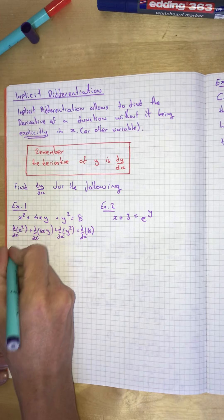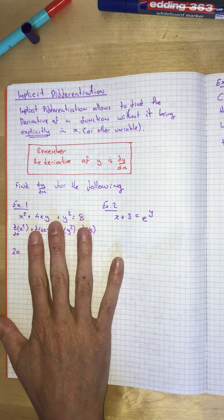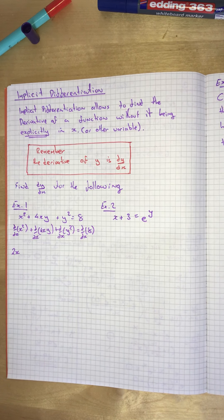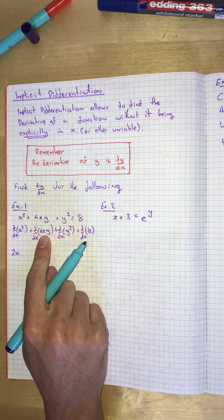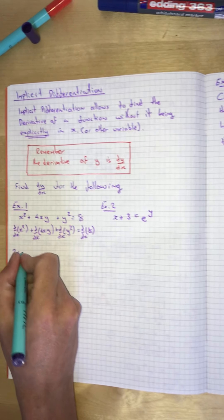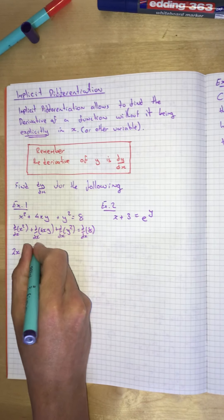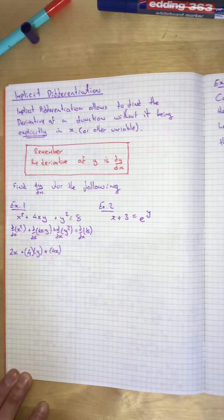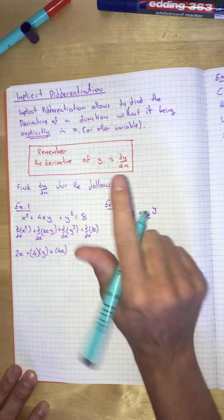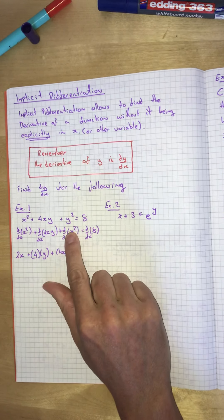Differentiate x squared — what do you get? You get 2x. Now how are we going to differentiate 4xy? That's two functions there: 4x and y. How do you differentiate two functions when they're products of each other? It's the product rule. So we're going to differentiate this big product. Differentiate the first function which is 4x and we get 4; leave the second function which is y; leave the first function 4x, and then differentiate y — what happens if you differentiate y? You get dy/dx. Now y squared is a function within a function.